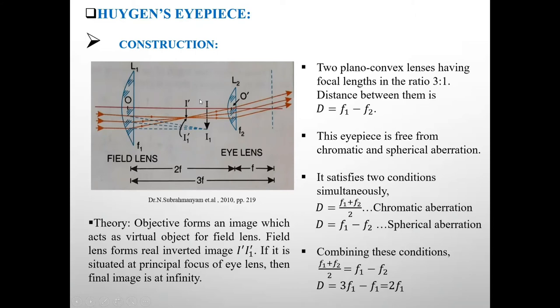This eyepiece is free from chromatic and spherical aberration. It satisfies two conditions simultaneously. First condition is for chromatic aberration, second condition is for spherical aberration. For chromatic aberration, the condition is D = (F1 + F2)/2. For spherical aberration, the condition is D = F1 - F2. If we put F1 = 3F, F2 = F, then 4F/2 = 2F, so D = 2F is satisfied. Again, 3F - F = 2F, so D = 2F is also satisfied.